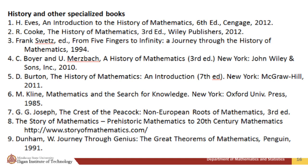Additional history references include: Kline, Mathematics and the Search for Knowledge, Oxford University Press, 1985; Joseph, The Crest of the Peacock: Non-European Roots of Mathematics, 3rd ed.; The Story of Mathematics: Prehistoric Mathematics to 20th Century Mathematics, at www.storyofmathematics.com; and Dunham, Journey Through Genius: The Great Theorems of Mathematics, Penguin, 1991.